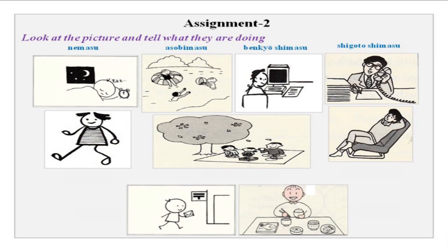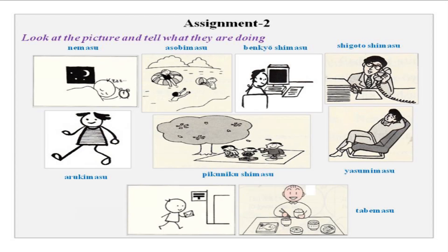Arukimasu — to walk. Yasumimasu — to relax, take a break, or take a vacation. The person has his eyes closed, so yasumimasu. He is eating — tabemasu. The people together on a sheet under the tree — minna piknik oshimasu. Then ikimasu.